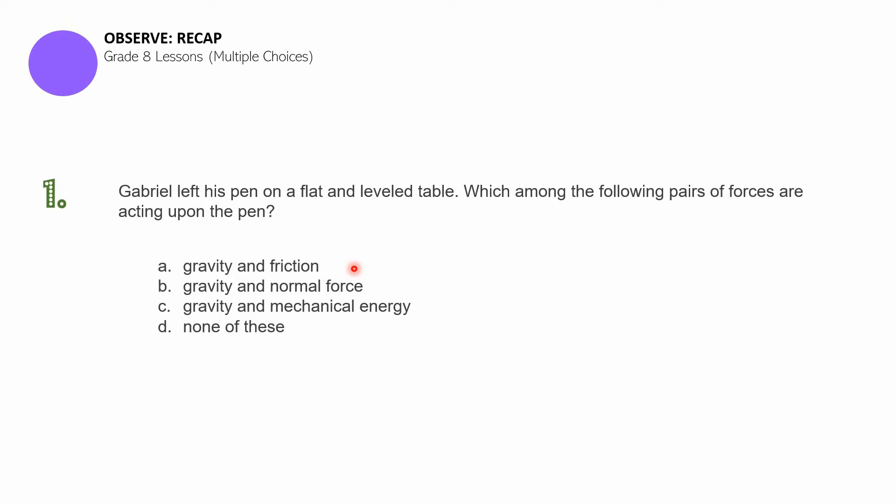For item number one, Gabriel left his pen on a flat and level table. Which among the following pairs of forces are acting upon the pen? A. Gravity and friction. B. Gravity and normal force. C. Gravity and mechanical energy. Or D. None of these.